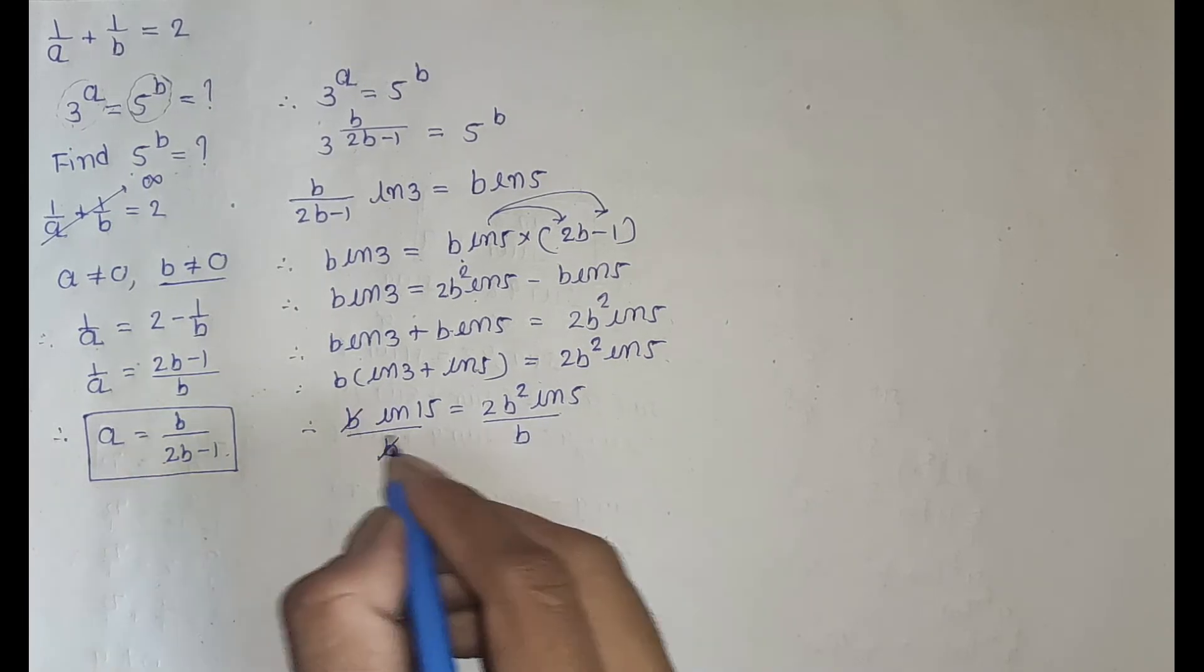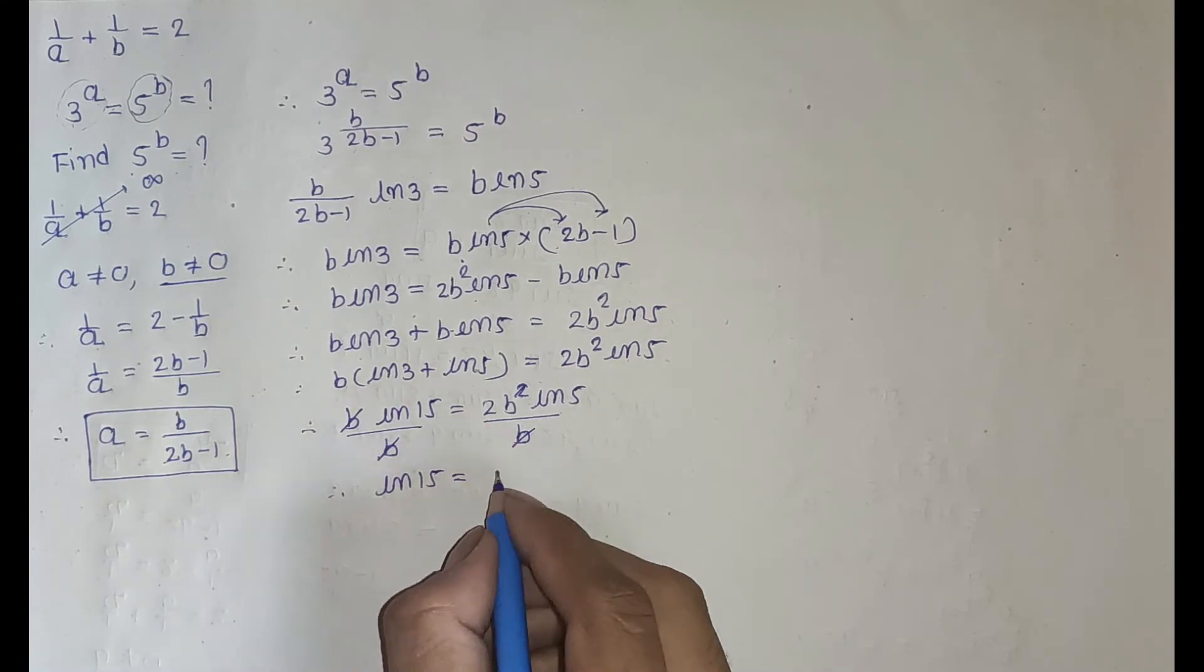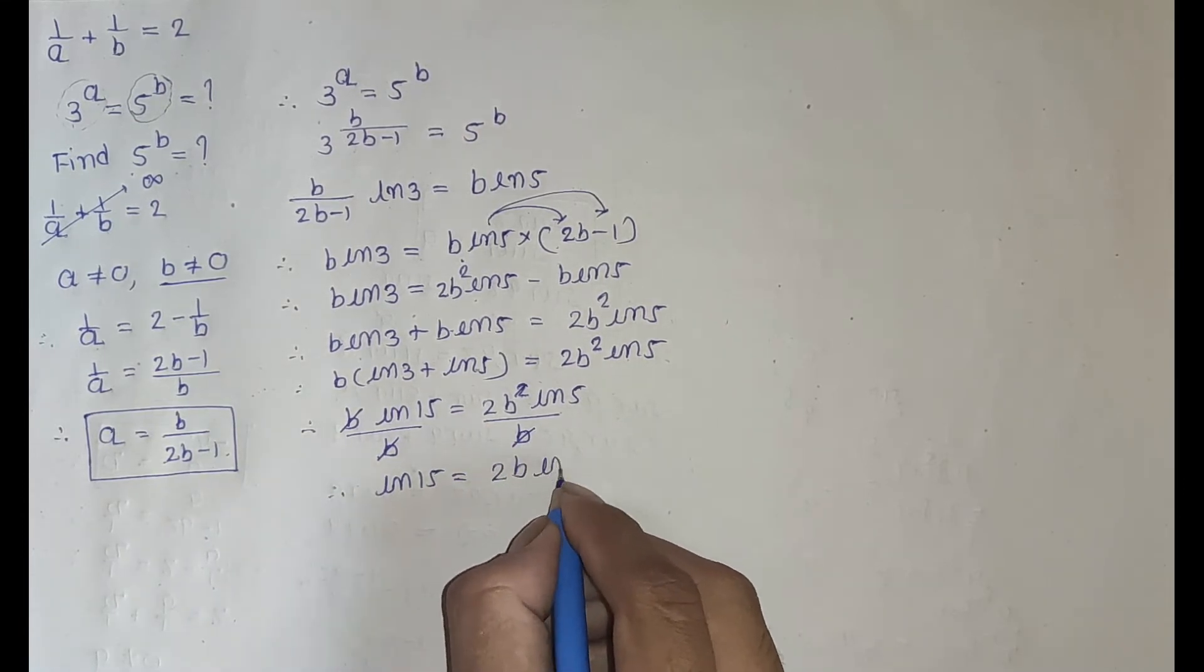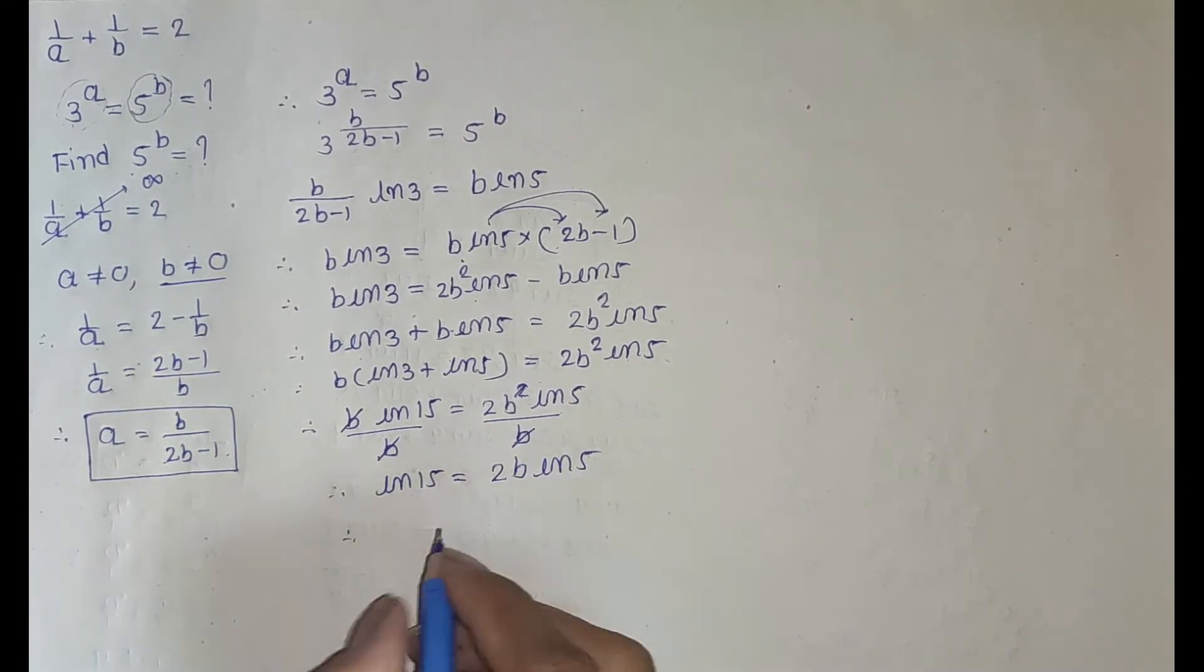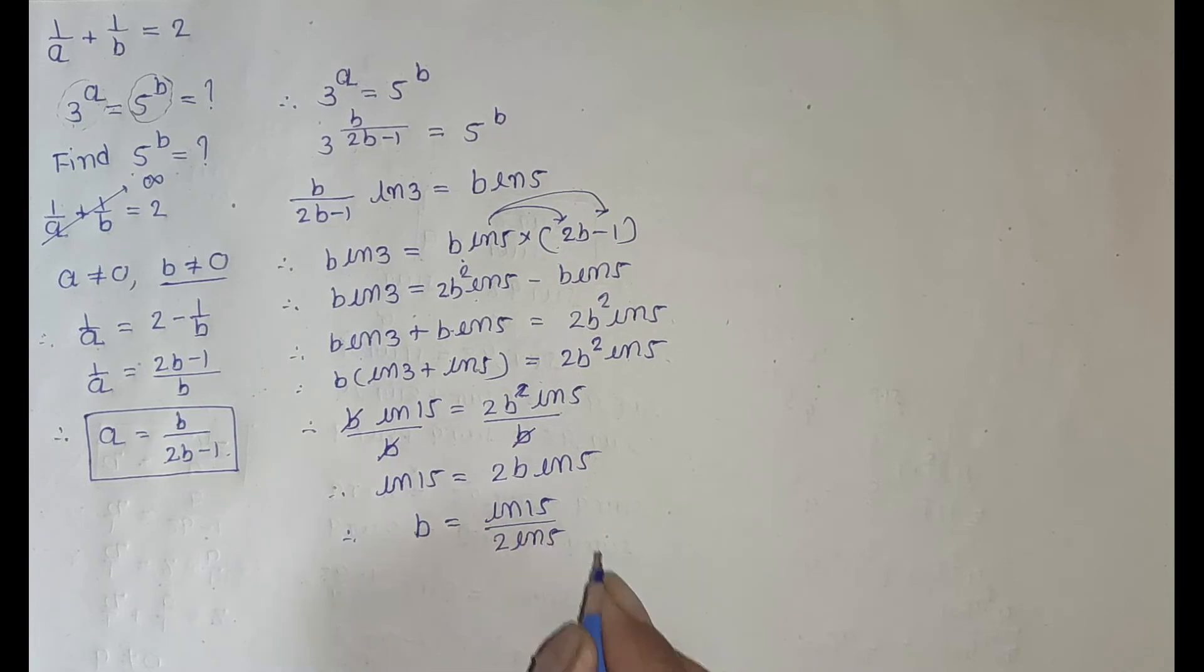Now b cancel. Here ln 3 plus ln 5 equal to 2 ln 5, which gives ln 15 equal to 2 ln 5. So b equal to ln 15 divided by 2 ln 5.